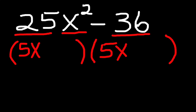Next, we take the square root of 36, which is 6. 6 times 6 is 36, and put it in the last two positions.